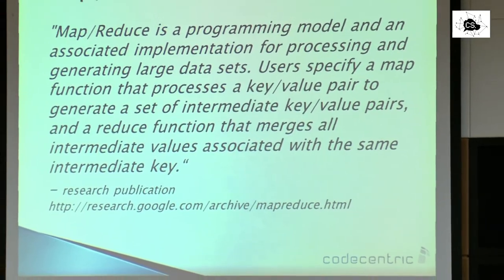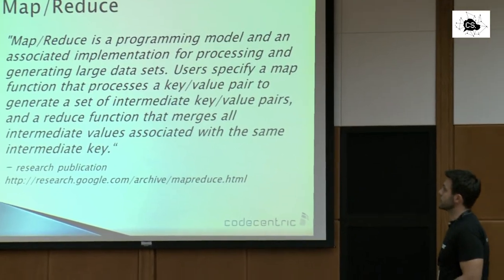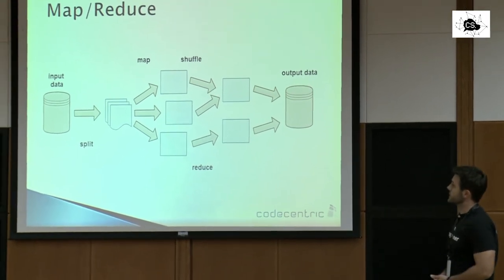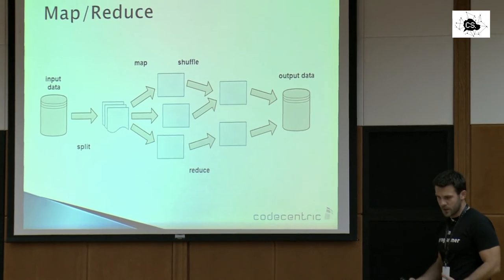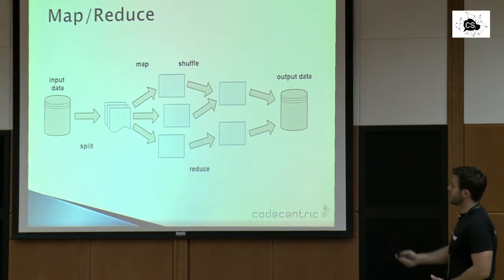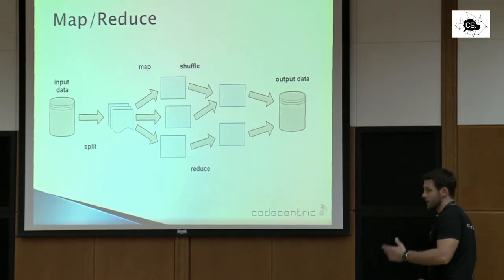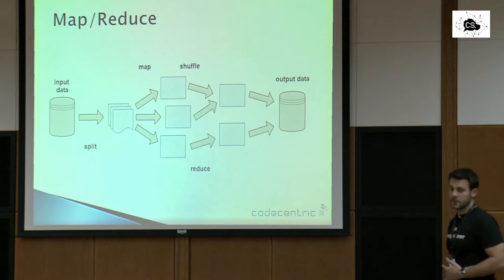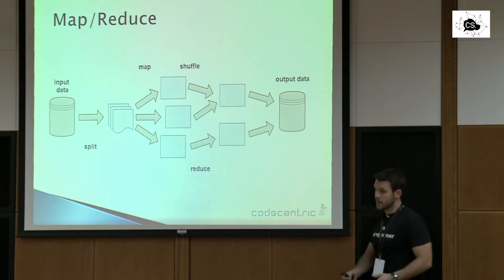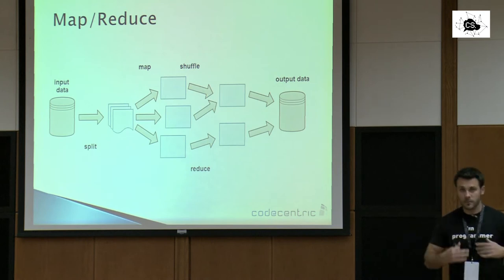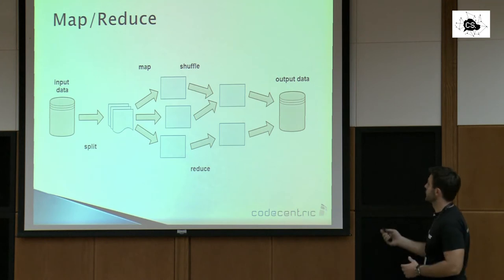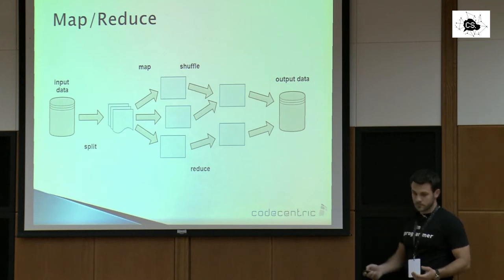This is a definition given by the Google guys who invented the MapReduce algorithm. Very simply: we have some large input data, we split it, and analyze only fractions of it in parallel. Then we do a bit of shuffling or sorting, collect those pieces back, and in the process called reduce, we reduce them to get our output result.